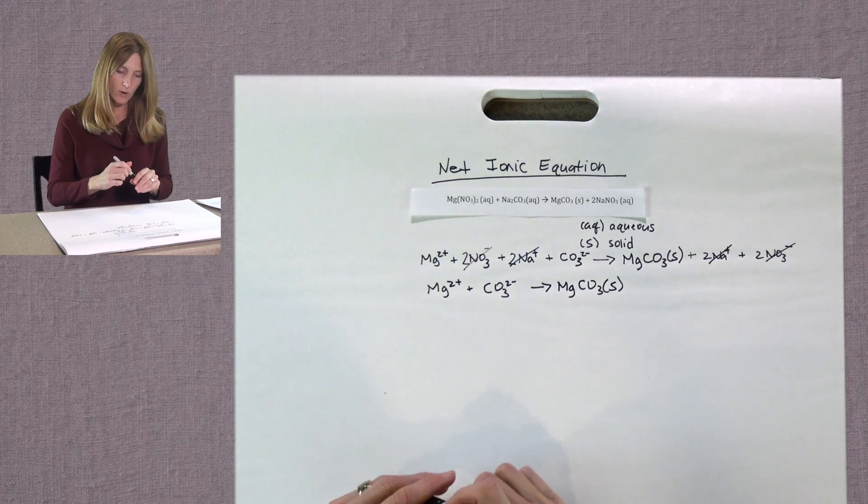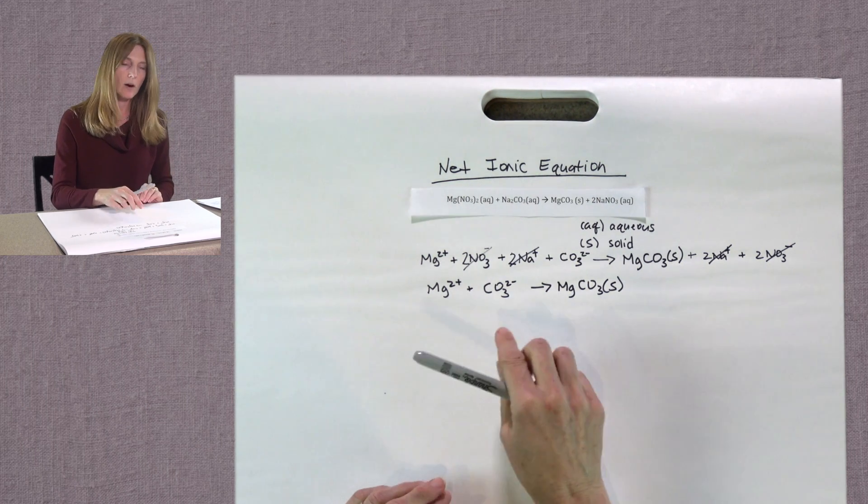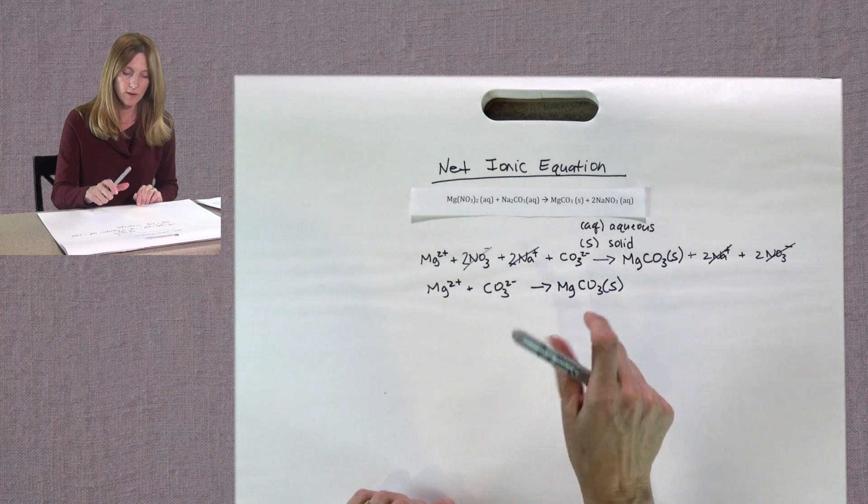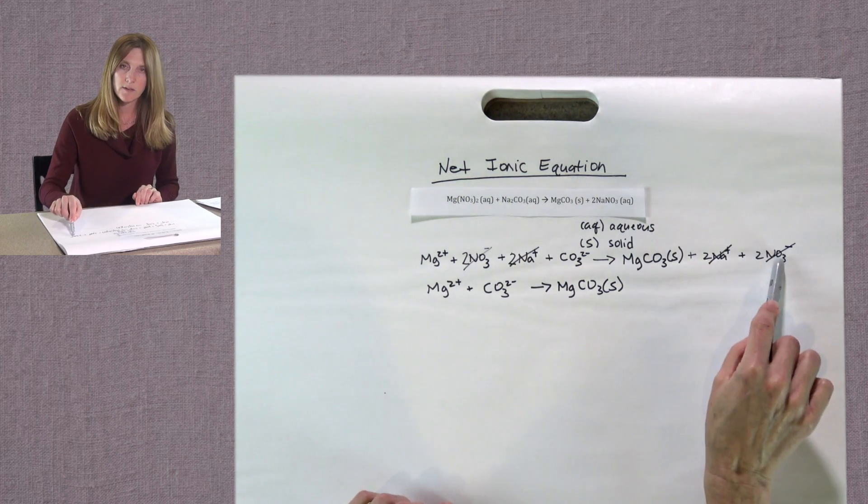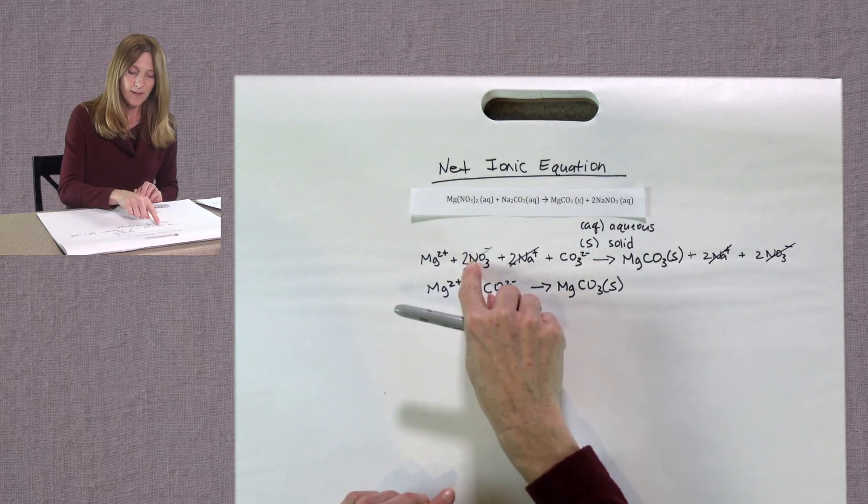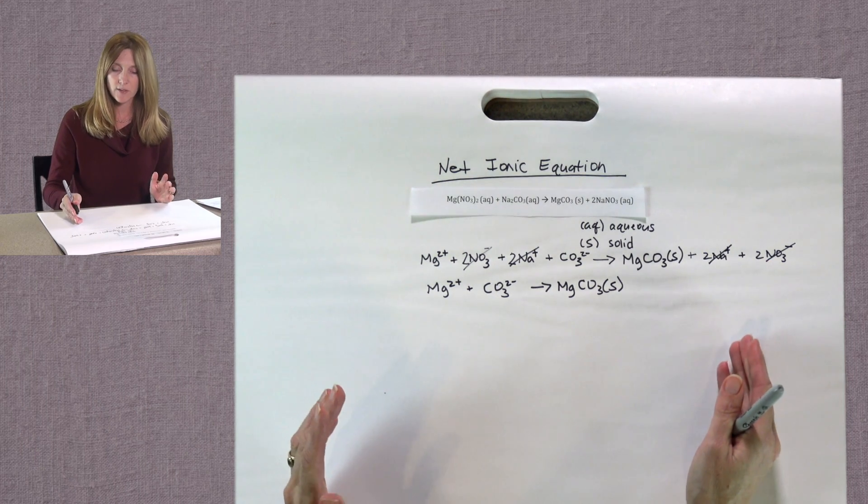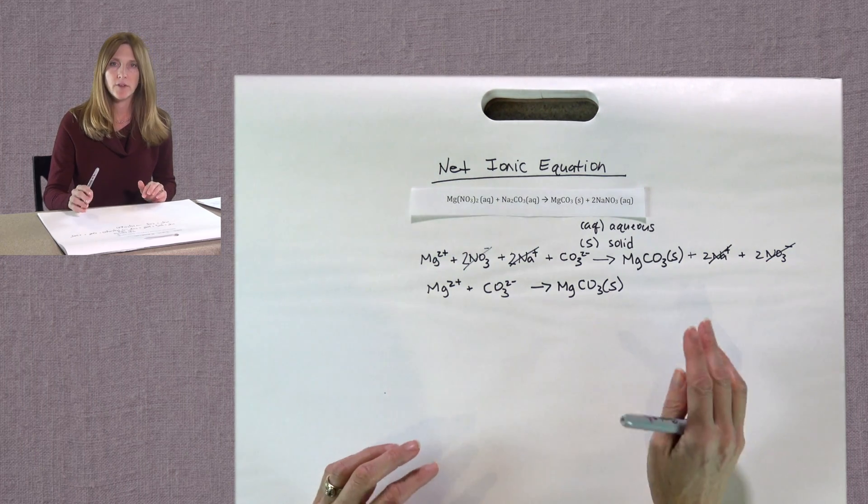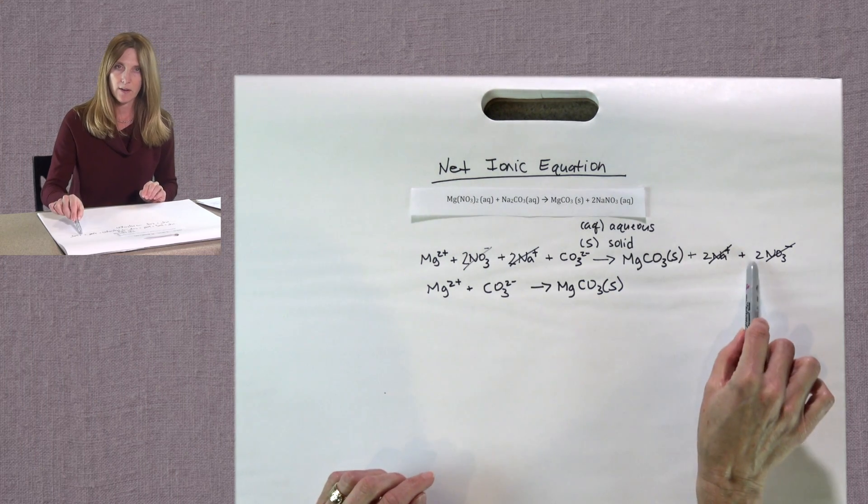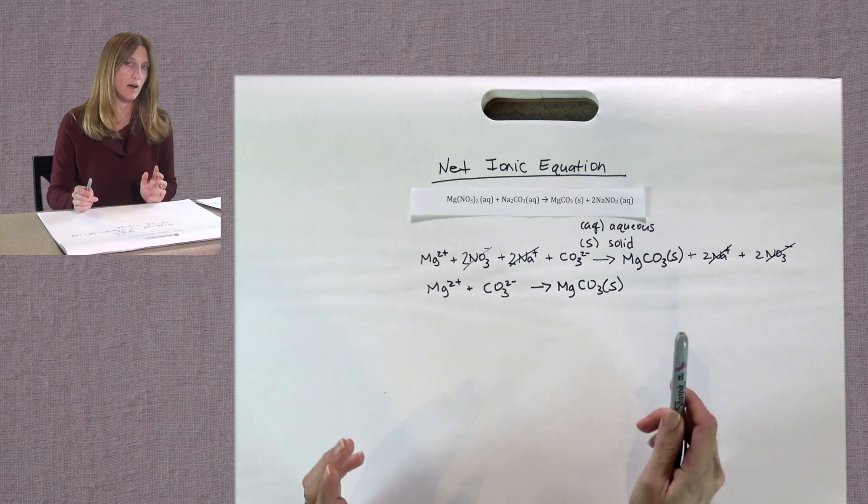And again, I want to emphasize why we write net ionic equations. We are only writing down the ions that are actually involved in a reaction. These other ions that we've crossed out, remember we talked about spectator ions. That's what these ions are. They're present during the reaction, but they are not involved. They're just watching. They're not participating. So they're called spectator ions. So we don't need to show them in the net ionic equation because they're not involved.